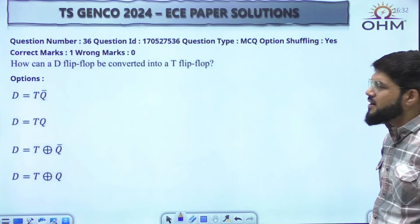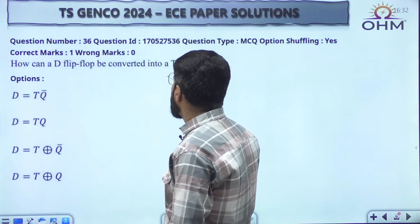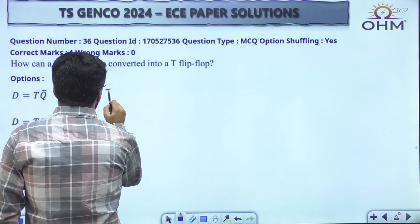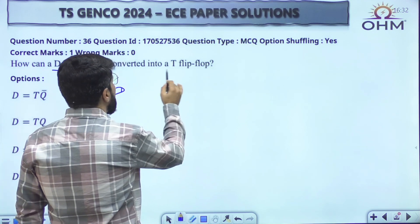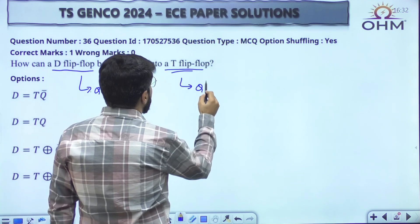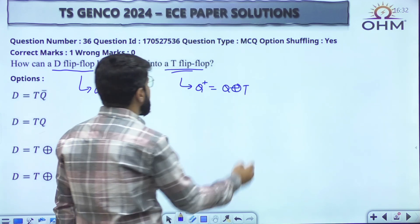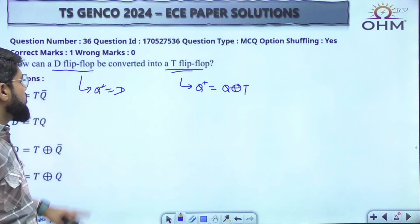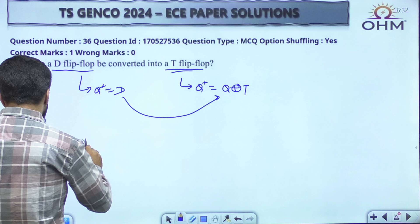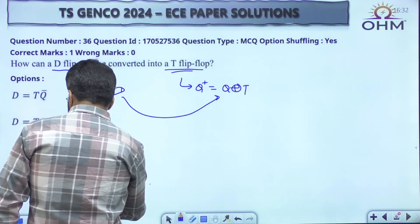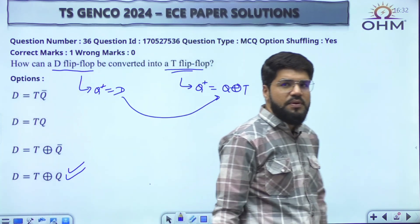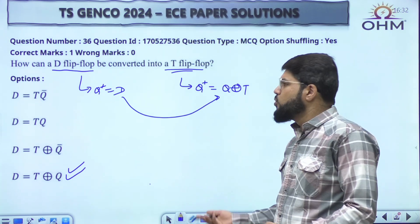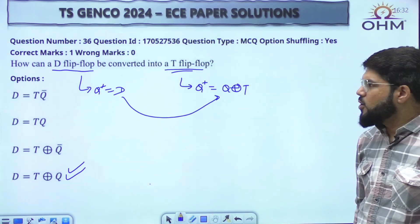How can a D flip-flop be converted to a T flip-flop? Simple: the D flip-flop next-state equation is Q+ = D. The T flip-flop next-state equation is Q+ = Q XOR T. So set D = Q XOR T, and the D flip-flop will behave as a T flip-flop. No need to even draw a diagram — if you know the characteristic equations, just tick option number D directly.